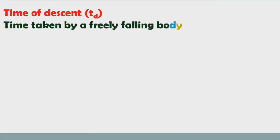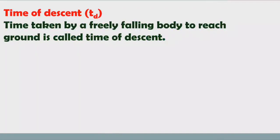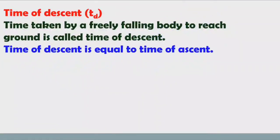Next, we will discuss time of descent. Time taken by a freely falling body to reach the ground is called time of descent, represented by TD. Remember: time of descent equals time of ascent. Whatever time it takes to reach maximum height, the same time it takes to reach the ground. So time of descent is also u/g.